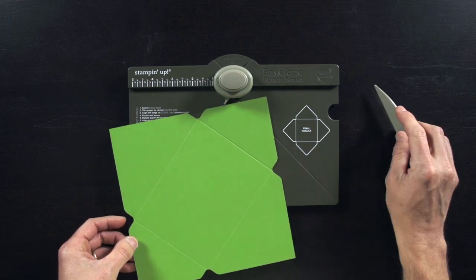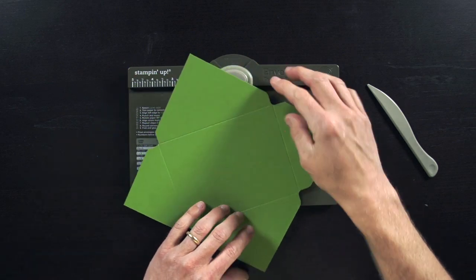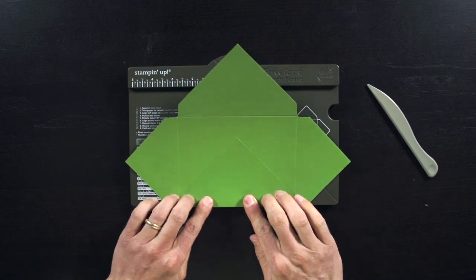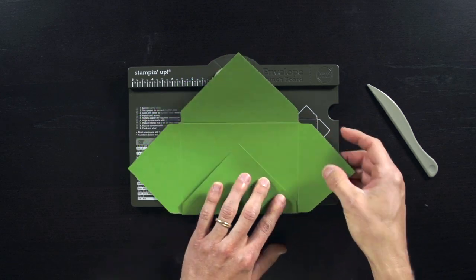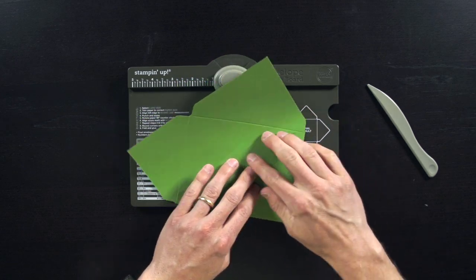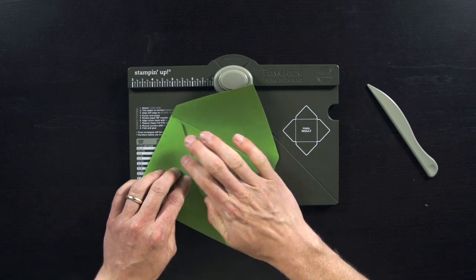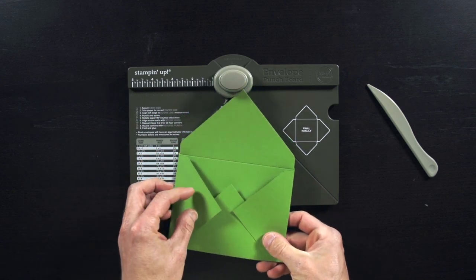And easy as that, I'm ready to fold my envelope. So when I do this, I can use several types of adhesive if I want. I could use mini glue dots. I could use snail. I could use sticky strip depending on how secure I want my envelope to be. But I could secure that shut.